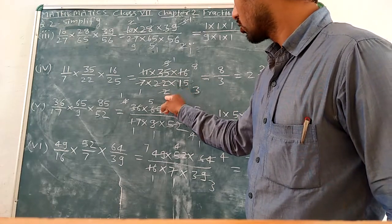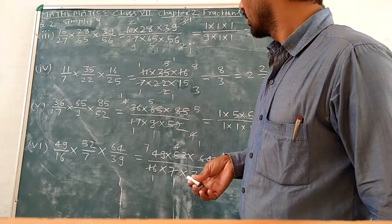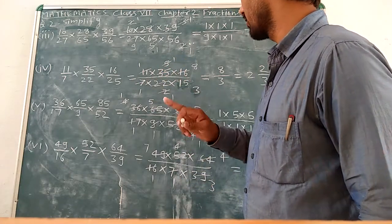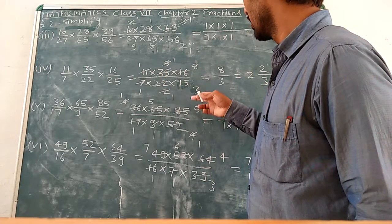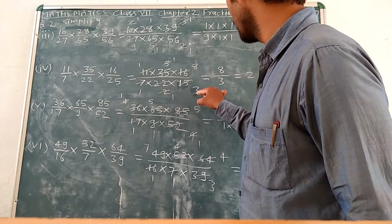11 upon 22, 11 upon 11. Now 7 upon 7, 7 upon 35, 5 upon 5.